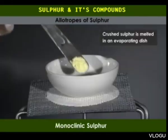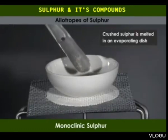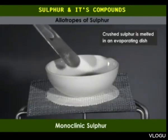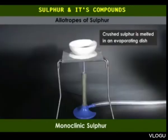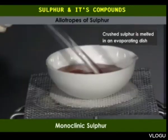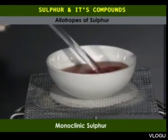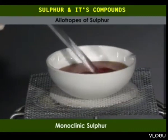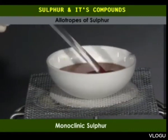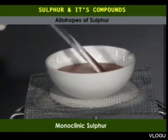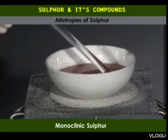Slow evaporation of carbon disulfide produces crystals of rhombic sulfur as shown on the screen. Monoclinic sulfur is only stable above 95.3 degrees Celsius. Needle-shaped crystals of the element can be prepared from molten roll sulfur.